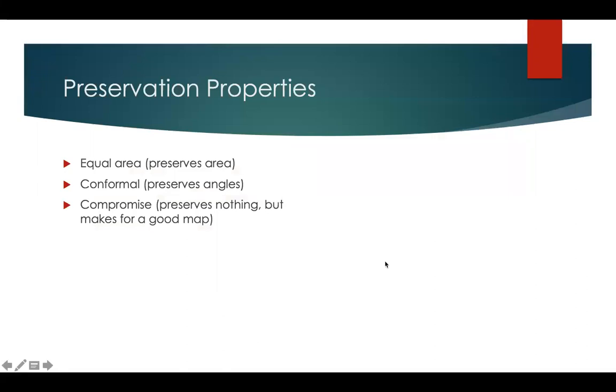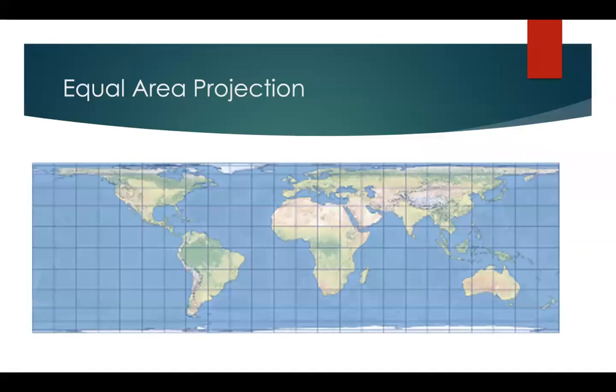Finally, we have the preservation properties. You will work with this on lab, so I'm not going to go into a ton of detail here, but suffice to say that you can pick a projection which either preserves area or angles. Equal area projections preserve area so that areas on the map are proportional to the projected version of the globe. For instance, Mercator,